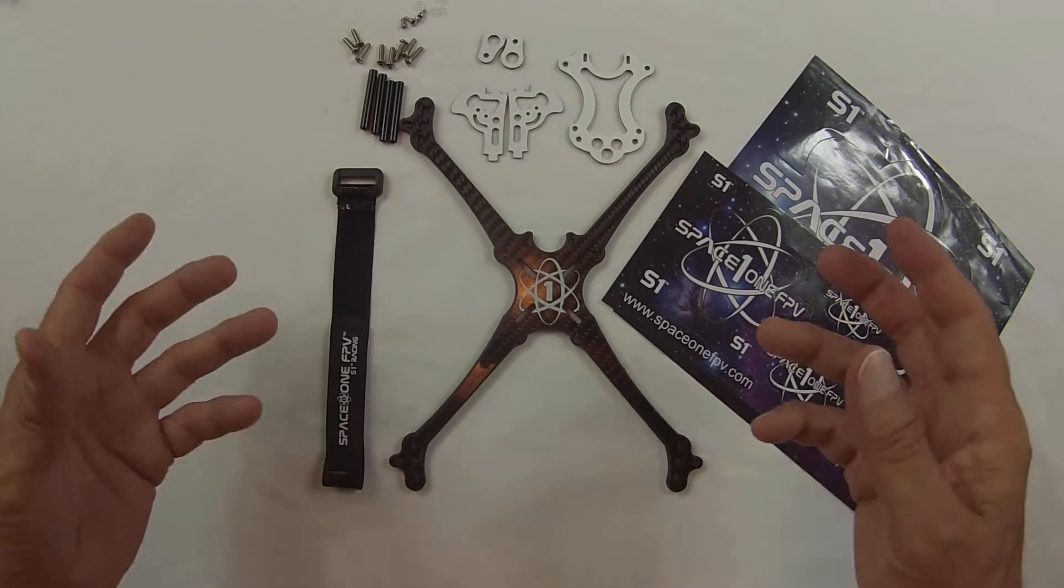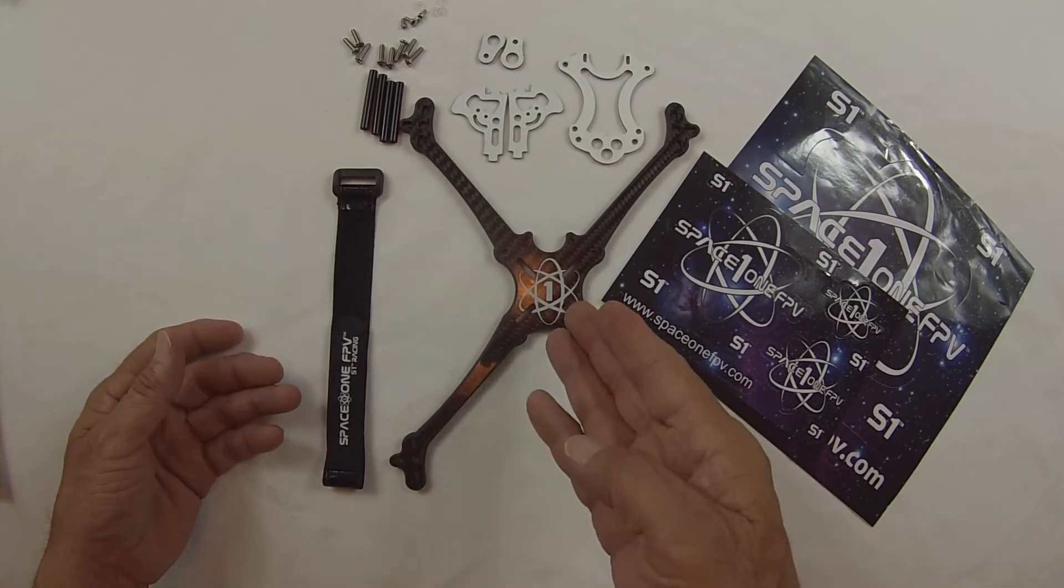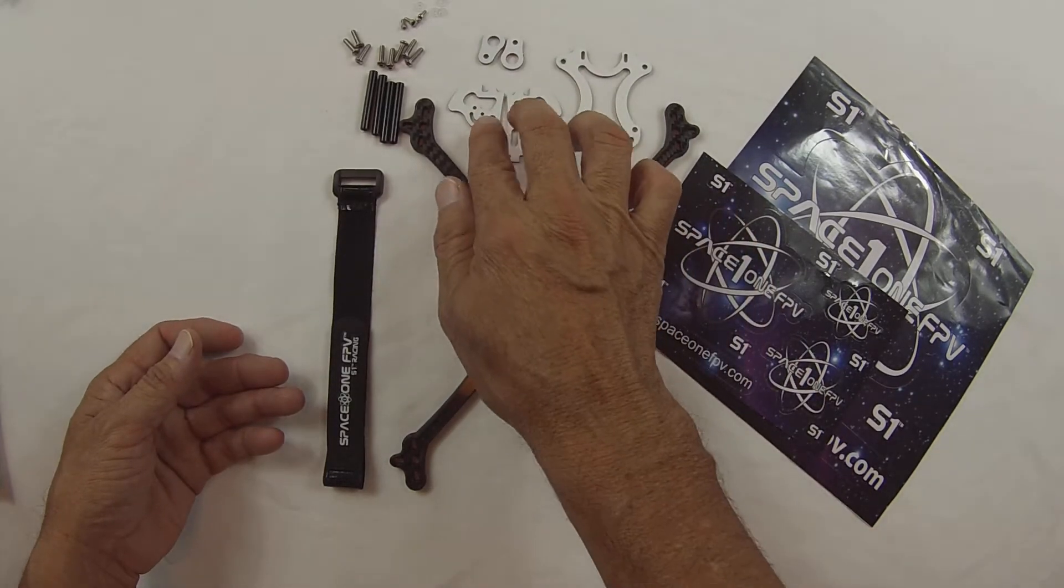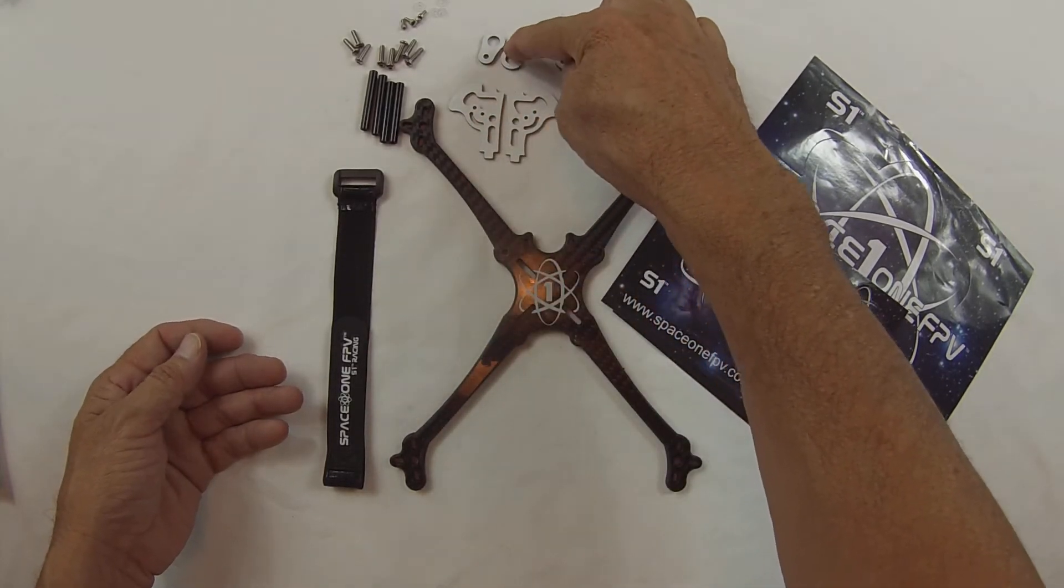Let's get right to the point. As you open the package, it comes with your mainframe, top plate, camera plates and your relocation antenna VTX plates.